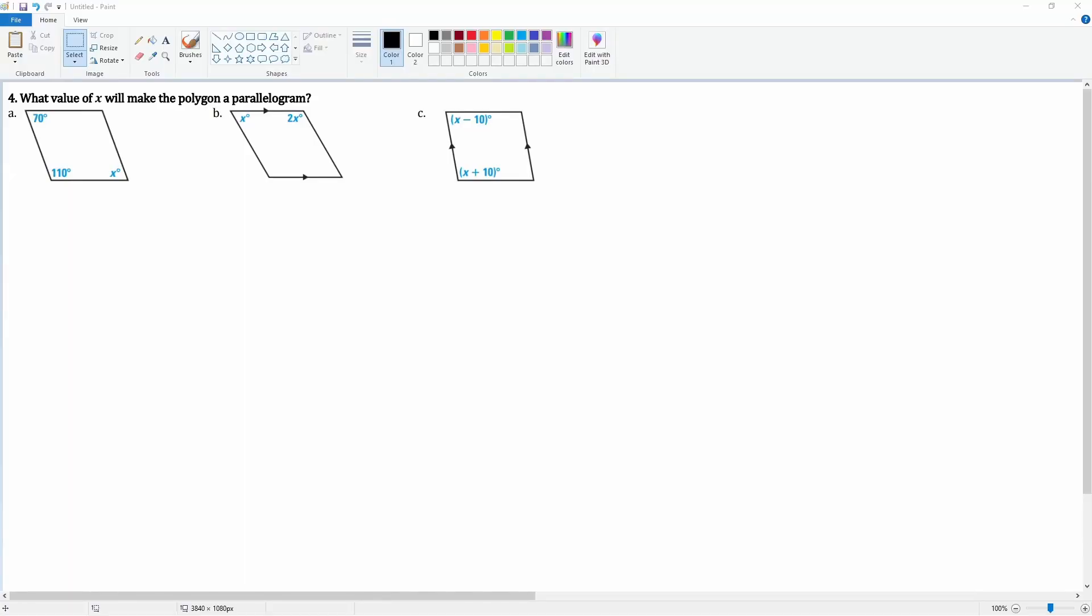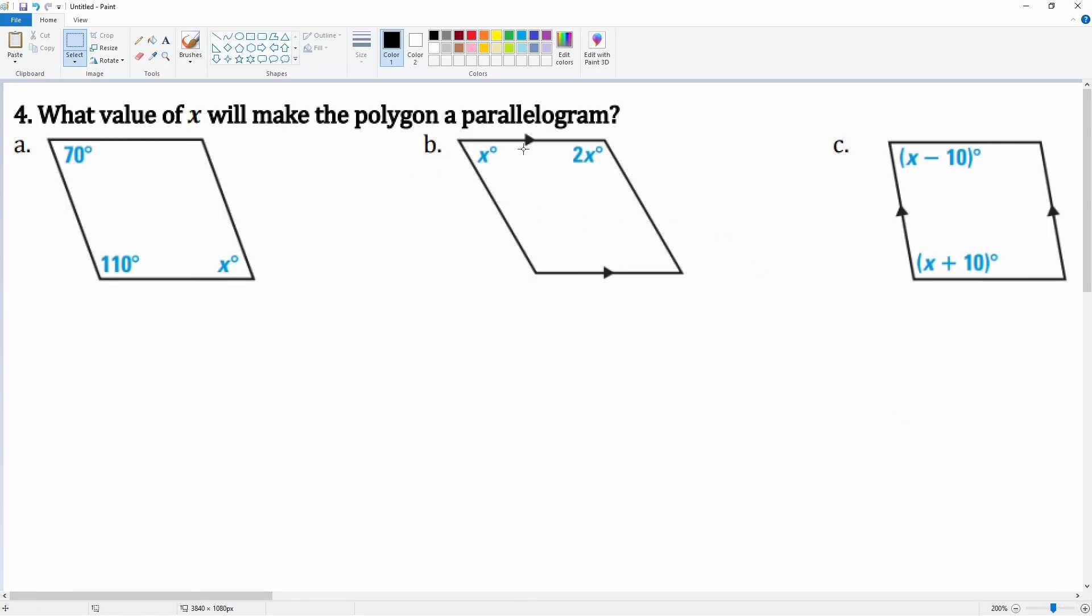Here we have number four. What values of x would make this polygon a parallelogram? Well, it's a parallelogram if we know that the opposite sides here are congruent. So that means the x here has to be equal to that 70. So if x is equal to 70, then that would be a parallelogram because the opposite sides are congruent.